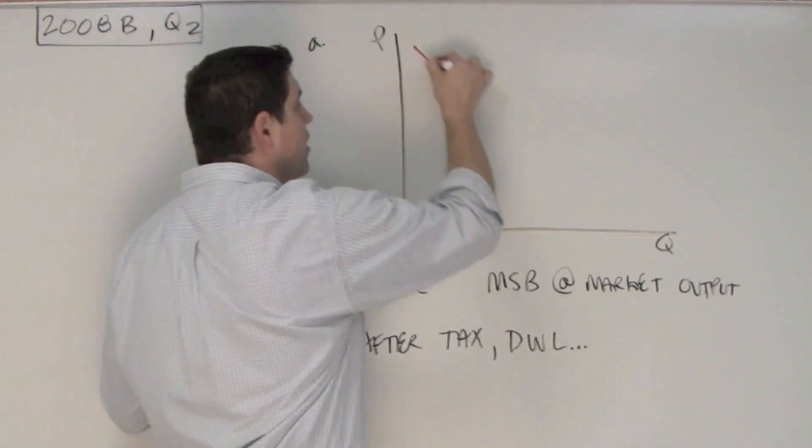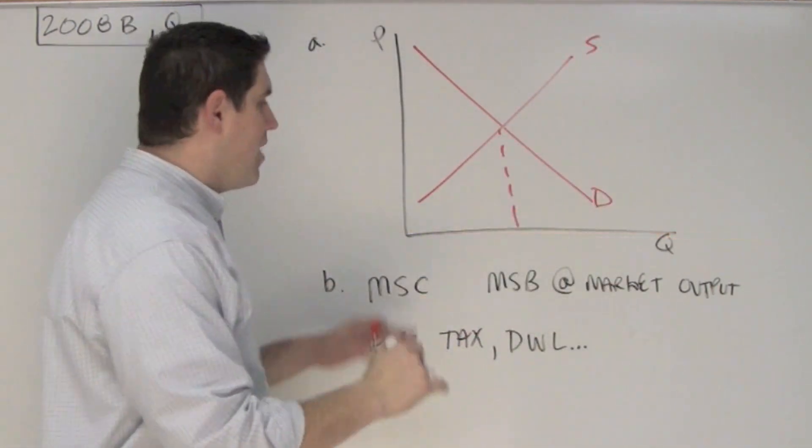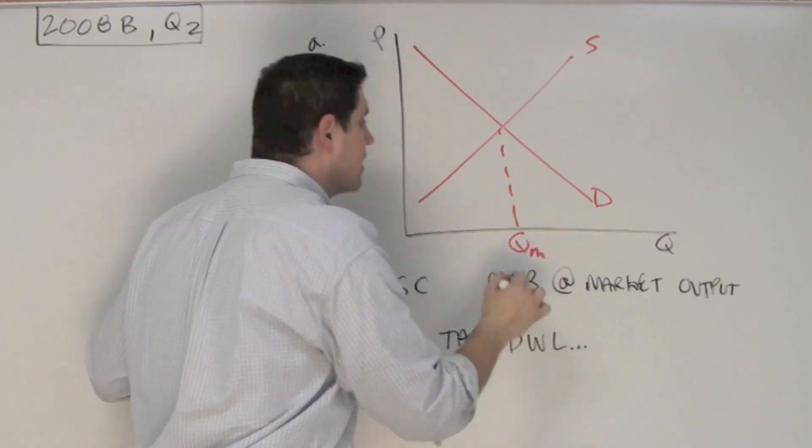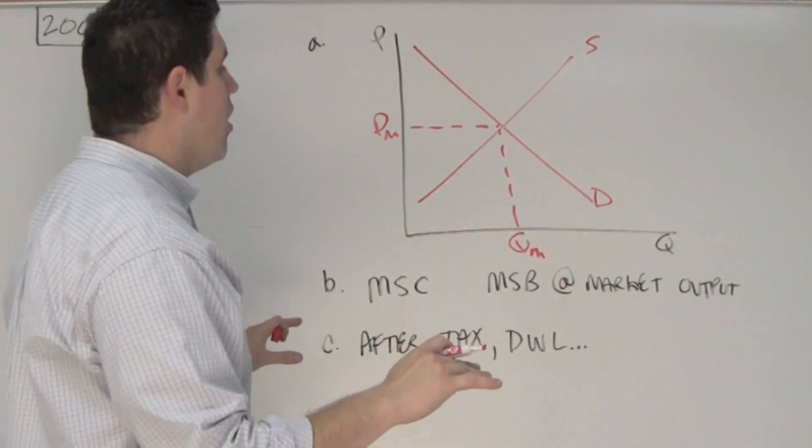So let's start drawing the graph. You've got a downward sloping demand curve, upward sloping supply. You'll notice from regular supply and demand, this is the quantity market and the price market. This is what the free market would produce if they're left to their own.